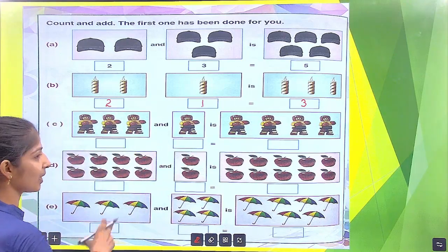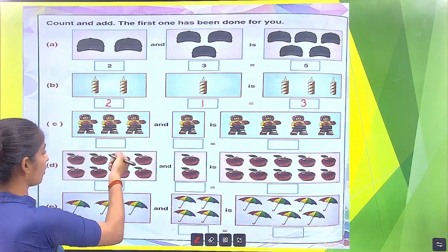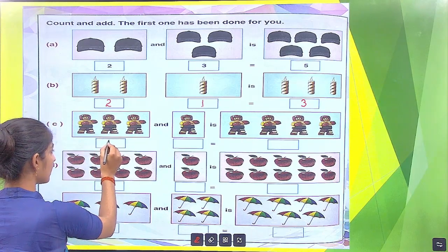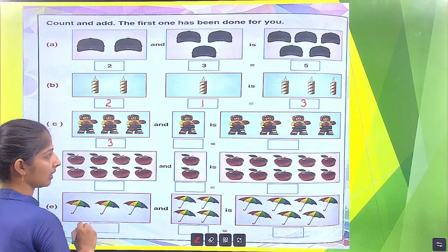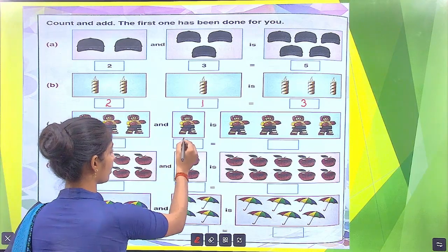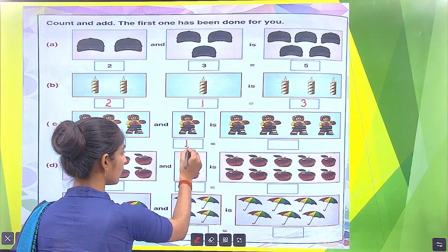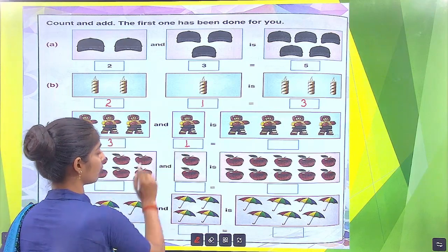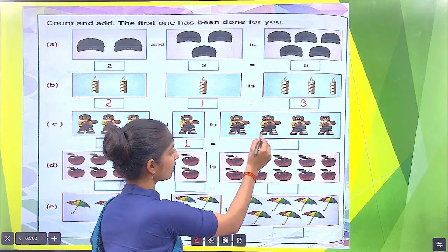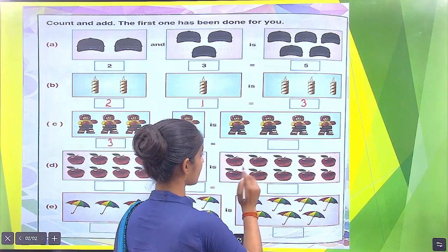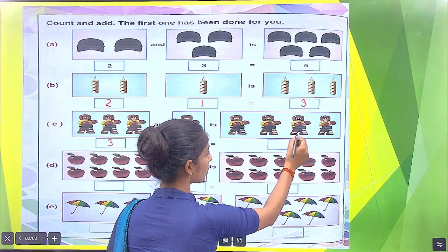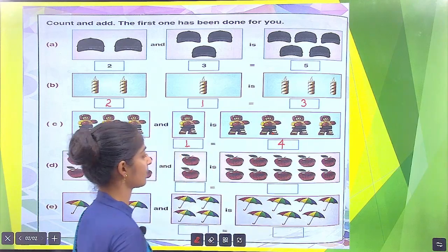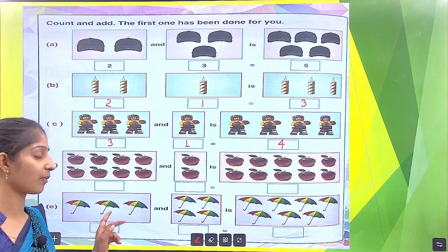Similarly, how many boxers? In the first box, we count 1, 2, 3. There are 3. We put here 3. In the next box, there is only 1 boxer. We put here 1. Count the total boxers: 1, 2, 3, 4. This is equal. So we put here 4.